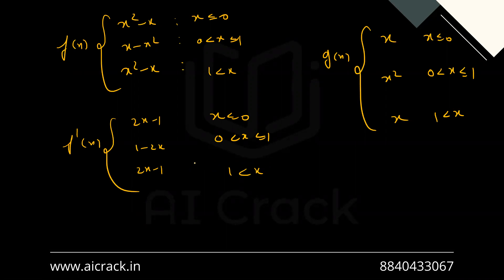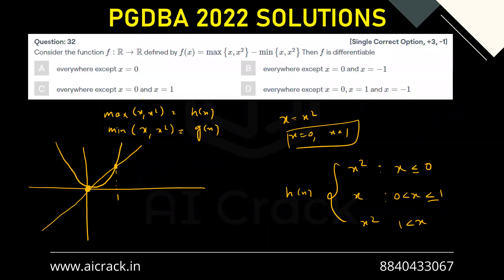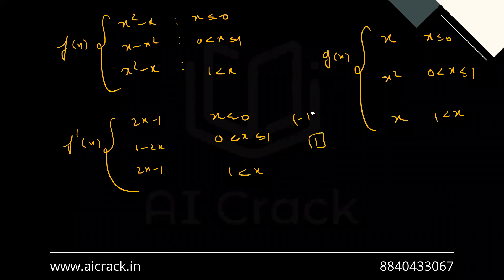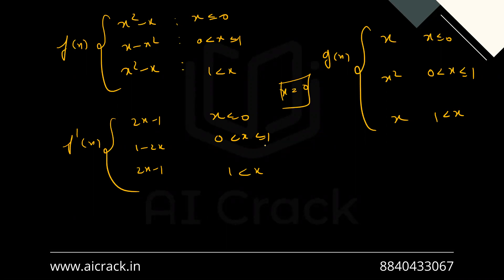The critical points are x = 0 and x = 1. At x = 0, the left-hand derivative is -1 (from the first piece) and the right-hand derivative is 1 (from the second piece). Since they are not equal, f is non-differentiable at x = 0.